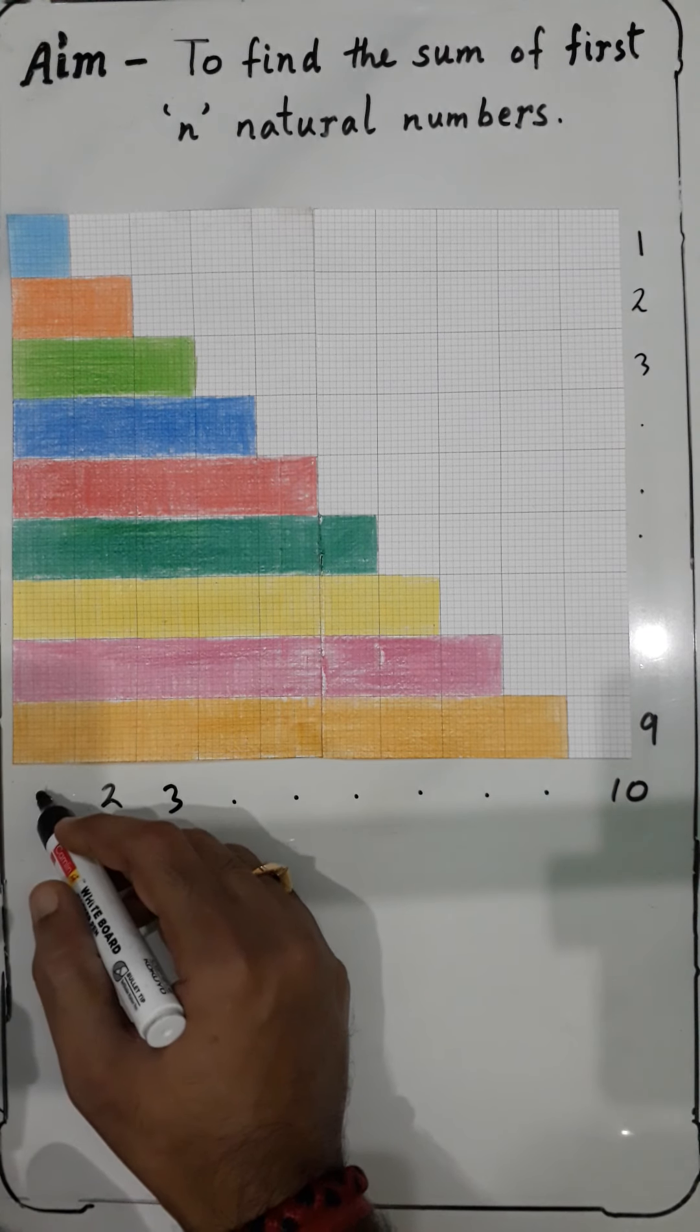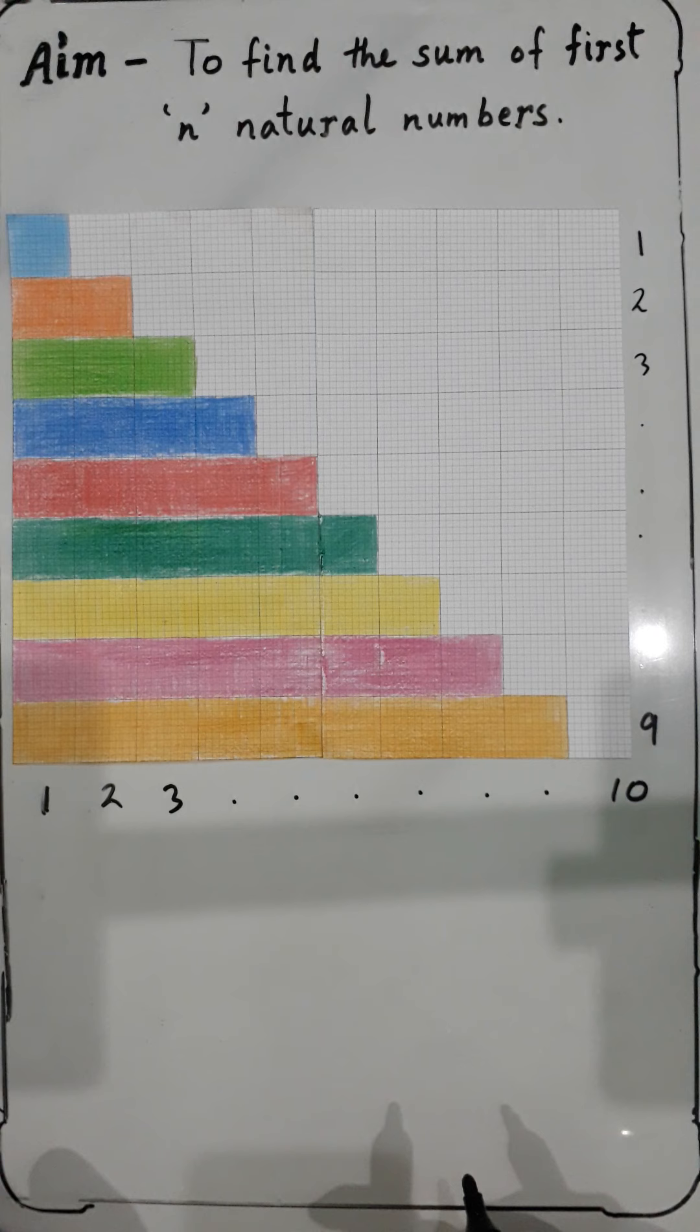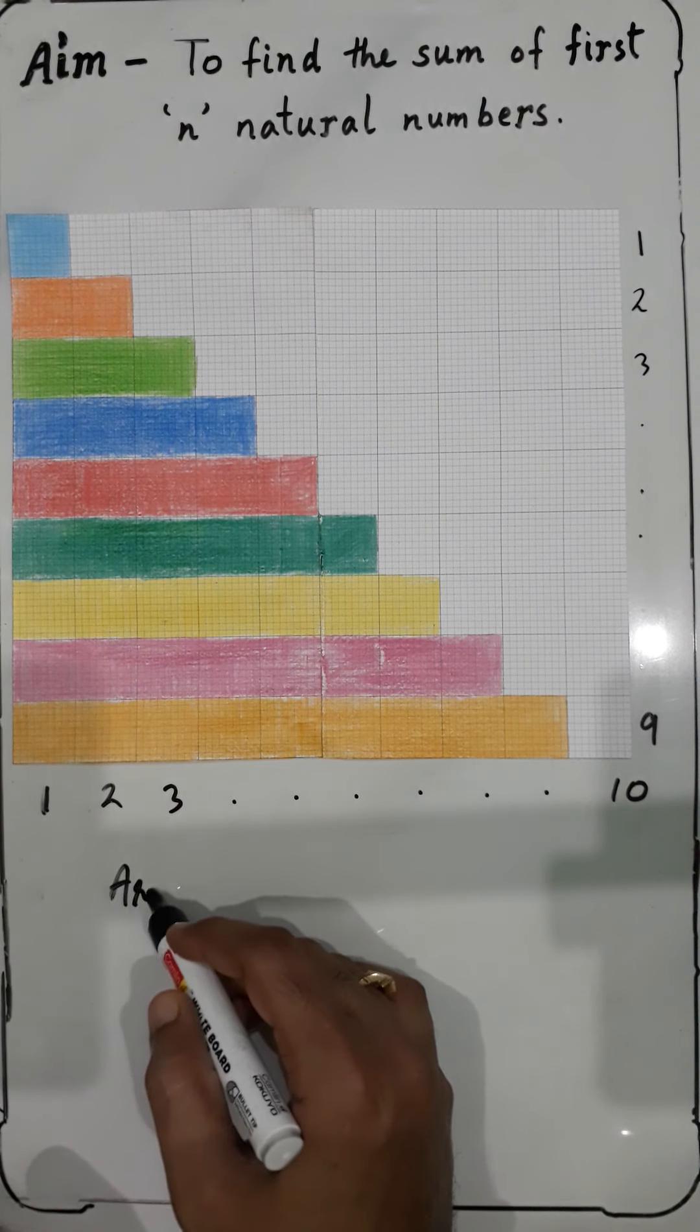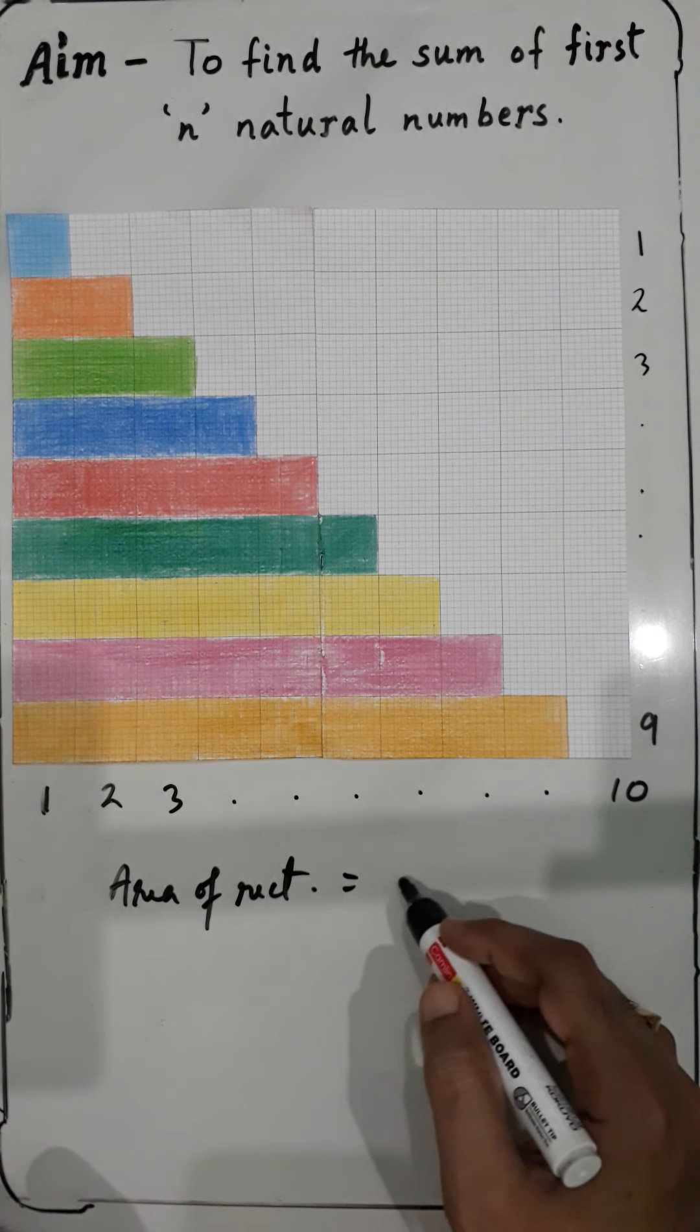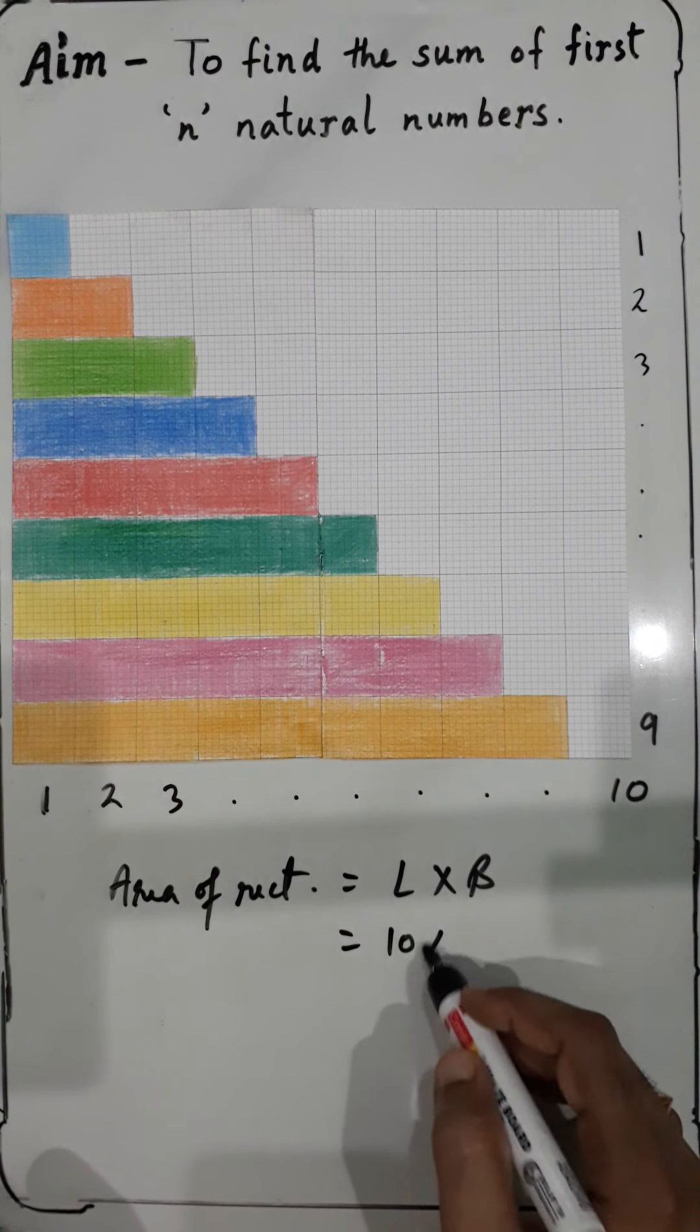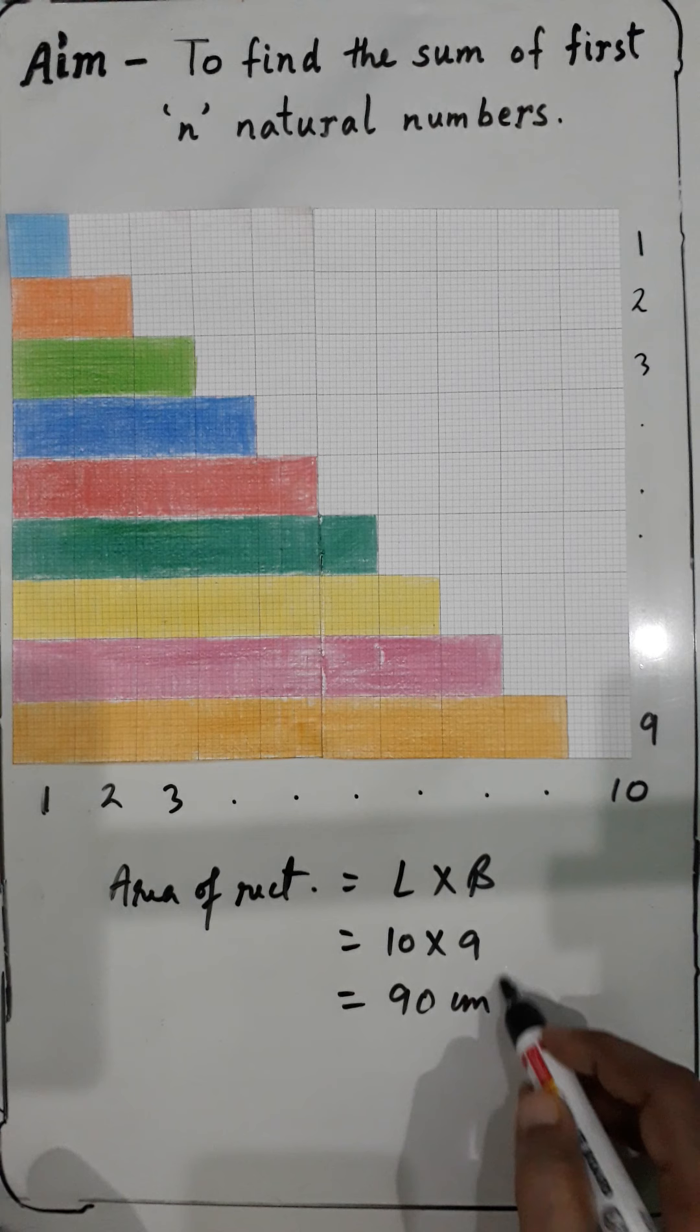Now if you are finding the area of this rectangle, it is obvious that the area of a rectangle, as people know, is length times breadth, which means 10 times 9, which equals 90 centimeters squared.